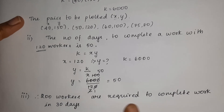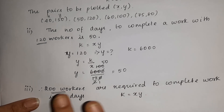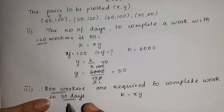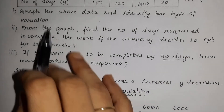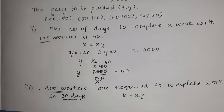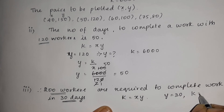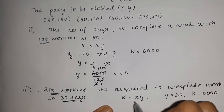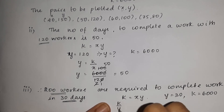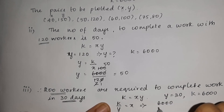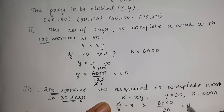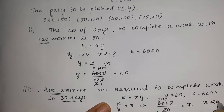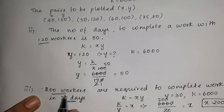Therefore, 200 workers are required to complete the work in 30 days. We verify: k = 6000, y = 30, so x = k ÷ y = 6000 ÷ 30 = 200. So the x value is 200 workers. The graph and calculation both confirm the answer is 200 workers. That is the answer.